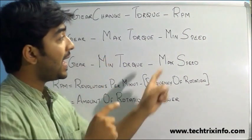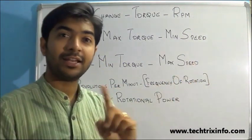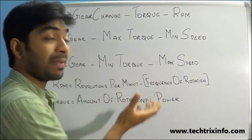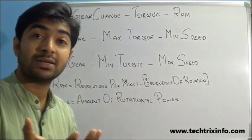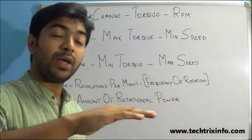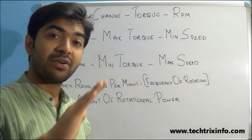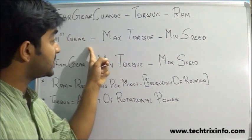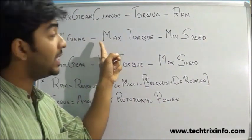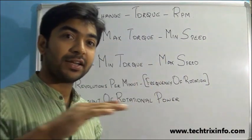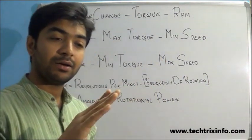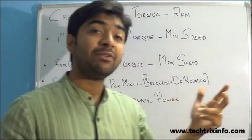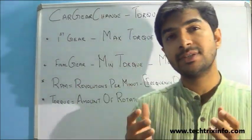The engine delivers maximum torque at the first gear and minimum speed at the first gear. So maximum torque is our requirement when we start a vehicle or drive uphill. That's why we select the first gear, which delivers the maximum torque while starting a car or driving uphill.